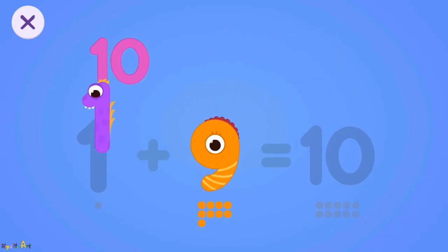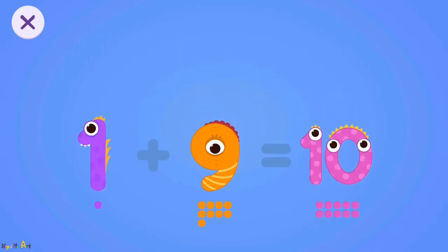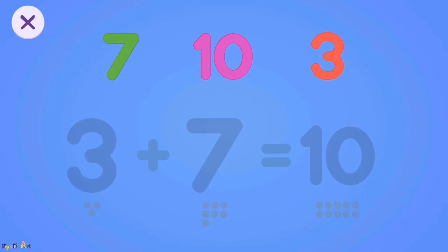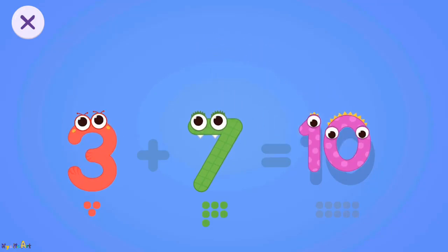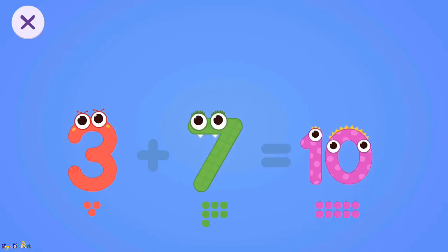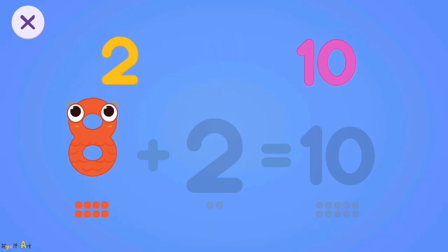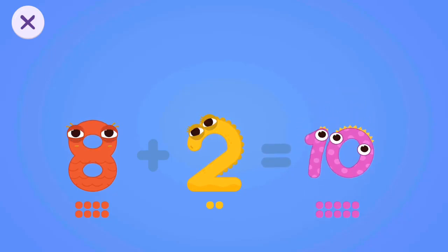Nine, one, ten. One plus nine equals ten. Seven, three, ten. Three plus seven equals ten. Eight, two, ten. Eight plus two equals ten. Yes! You did it!